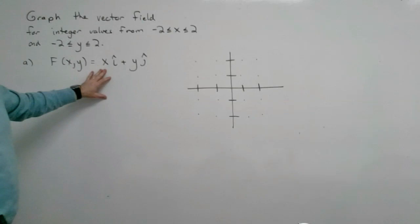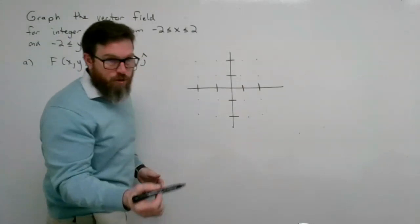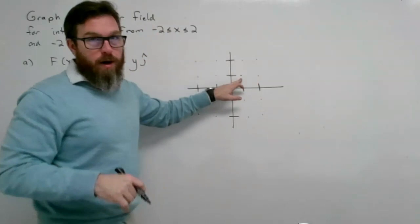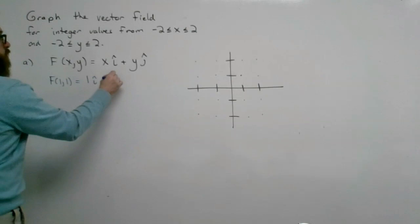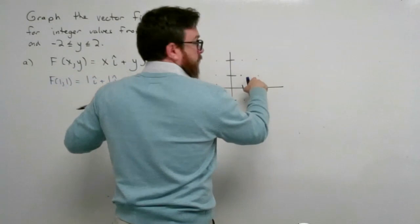I want to graph this for particular points, with dots at all the integer values. For the coordinate (1, 1), I evaluate the vector function at (1, 1): x is 1 and y is 1, so this gives 1i + 1j. Graphing the vector (1, 1) at that point, it moves 1 in the x direction and 1 in the y direction.